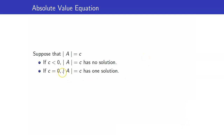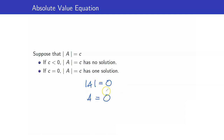What if the constant c is equal to 0? We have the absolute value of A equals 0. What should A be for its absolute value to equal 0? That means the expression has to be equal to 0. So this equation has one solution: A equals 0.